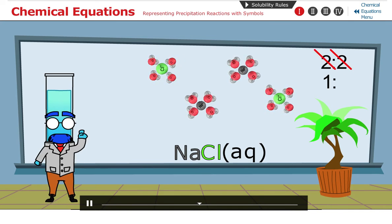In this example, it's 1 to 1, one sodium ion for every chloride ion.